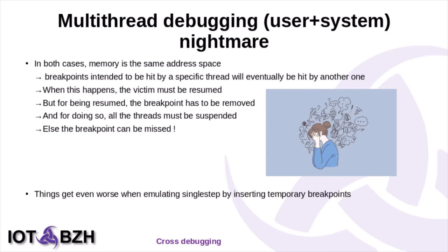One of the most complicated problems a debugger has to deal with is multi-thread debugging, especially when there is a lot of shared code and you want to use thread-specific breakpoints. In both cases you are in the same address space. When you put a breakpoint, it will eventually be hit by a thread that was not the intended one. The victim thread must be resumed, but before modifying process memory you have to stop all other threads, otherwise you will lose breakpoints in other threads. Things get even worse when you don't have hardware support for single step and emulate it with temporary breakpoints.